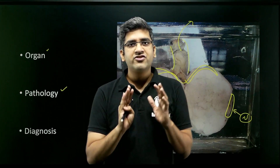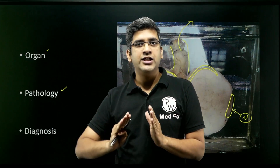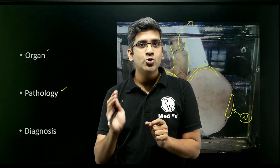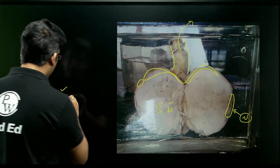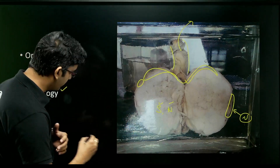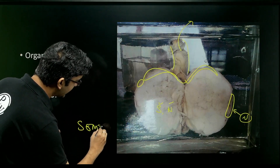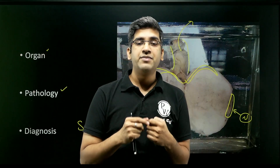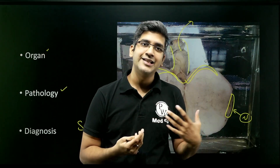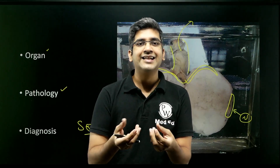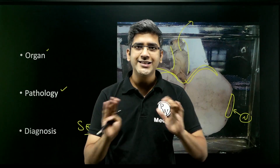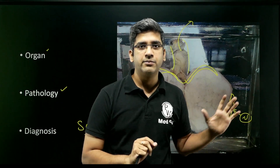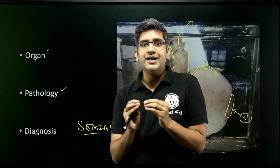A solid, homogeneous, fleshy architecture in the cut surface of the testis most likely indicates a testicular tumor. The most likely diagnosis here is seminoma, because seminoma is the one which has this solid appearance. The finding of a brain-like or potato-like consistency is more appreciable on a freshly cut gross specimen; this is a stored specimen so I cannot palpate it. Solid, homogeneous, no areas of hemorrhage or necrosis, and normal testicular parenchyma is compressed — my most likely diagnosis is seminoma.